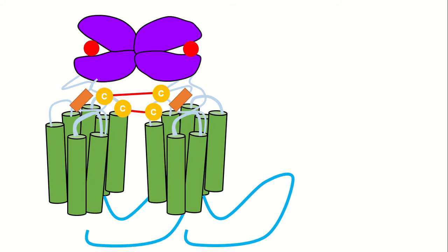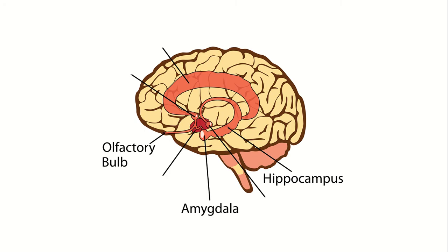MGluR5 is found as a disulfide-linked dimer on the plasma, nuclear, and ER membrane. MGluR5 is primarily expressed in the CNS, including but not limited to the olfactory bulb, amygdala, and hippocampus.